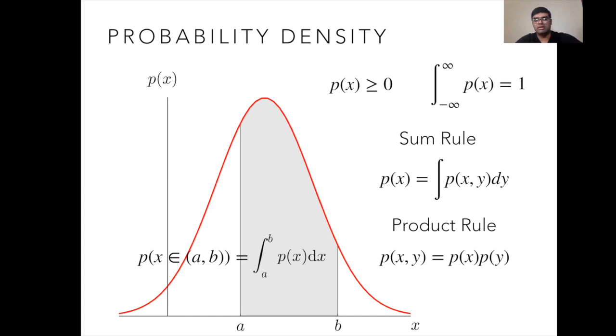These two rules play a wider role in deriving Bayes theorem, which is a very important result in entire Bayesian inference and related topics. It's important to keep these in mind.